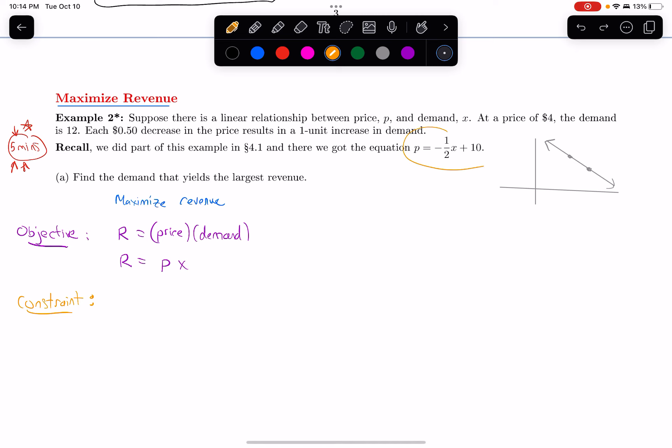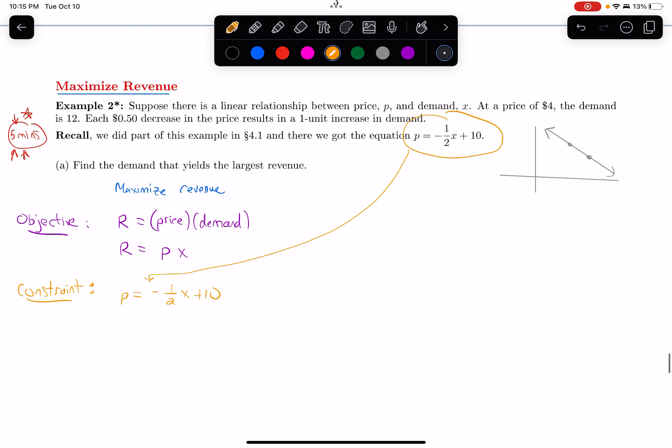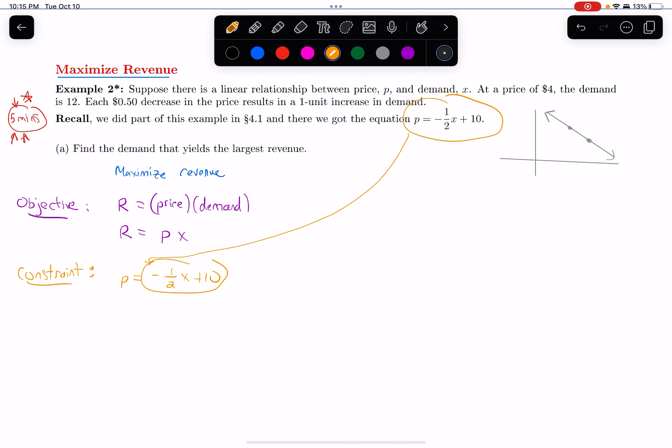So the other equation is actually given to me in the problem. So my constraint is p equals negative one half x plus 10. So I'm going to take that and substitute it in where I got the p in my revenue. So I'm going to substitute it in. So I got r equals p times x. And for the p, I'm going to plug in negative one half x plus 10.